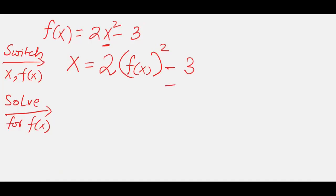So let's start with this 3. Adding 3, we can eliminate. So add 3 here. This 3 and this 3 is gone. Let's clean up a little. So we have x plus 3 on the left hand side equals 2 times function of x squared.